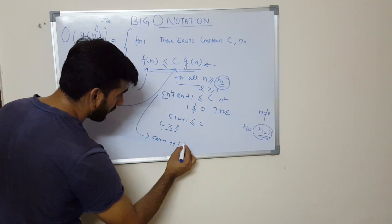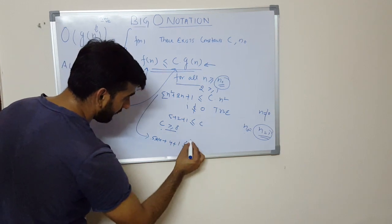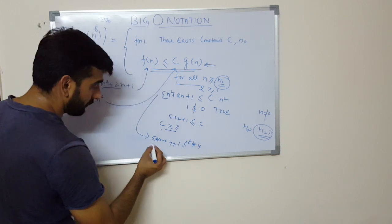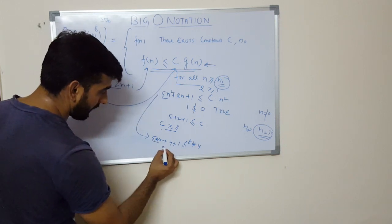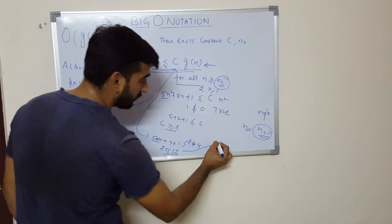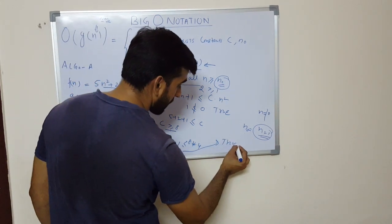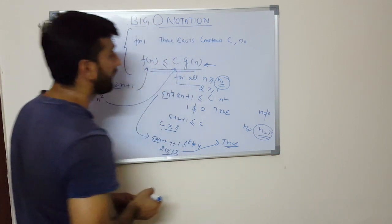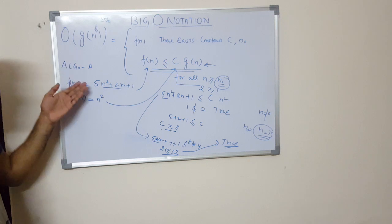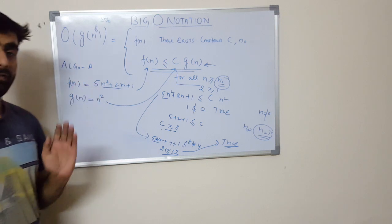So this is 25 is less than or equal to 32, which again holds true. So this is how we can find out the Big O notation and we can describe it.